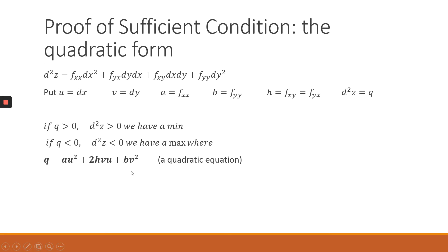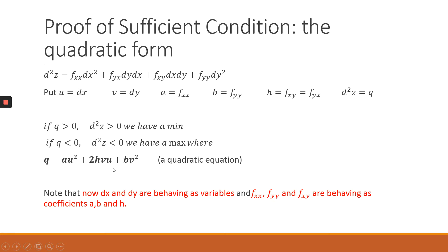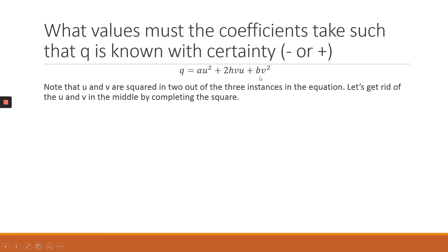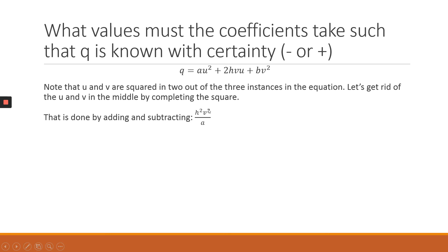We have formulated a new quadratic equation in which u and v — the changes in x and y — behave like variables, while a, b, and h behave like coefficients. Of the three terms, only two are squared, so we need to complete the square to proceed with the analysis. To do this, we add and subtract h²v²/a, which is mathematically valid since adding and subtracting the same quantity changes nothing.